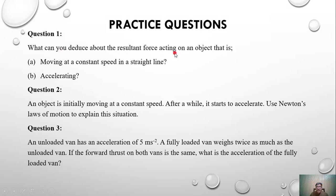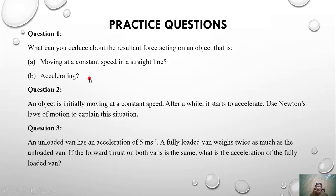Practice question one: what can you deduce about the resultant force acting on an object moving at constant speed in a straight line? If an object is moving at constant speed in a straight line, it means the resultant force is zero — balanced forces are acting. This relates to Newton's first law. For an object that is accelerating, using F = ma, as acceleration increases the resultant force is also increasing — Newton's second law applies.